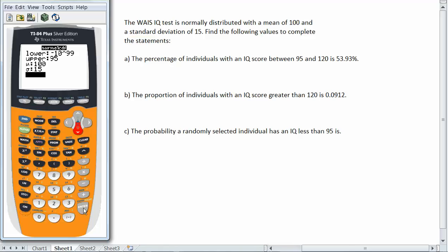So I go and I paste this into the command screen and hit enter. And I get my result. The probability a randomly selected individual has an IQ less than 95 is 0.3694.